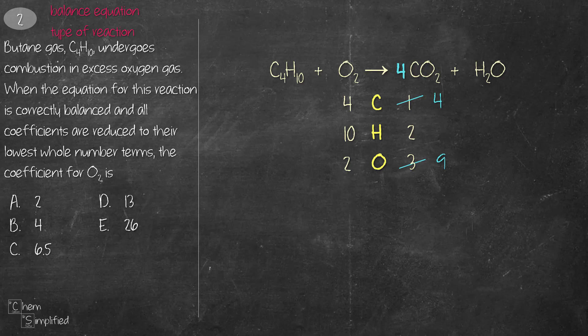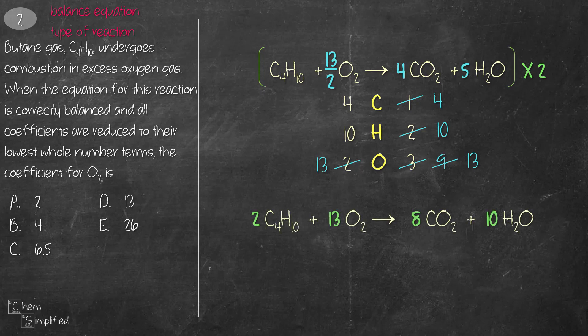To balance H on the right we add a 5 in front of H2O, giving us 13 oxygen total. To get O2 to equal 13 we multiply by the fraction 13/2, since 13/2 times 2 gives us 13 — so our equation is now balanced. However, fractions are not allowed, so we multiply the entire equation by 2. The coefficient in front of O2 is 13, so the answer is D.